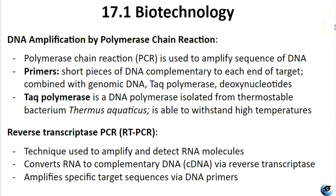We can also amplify fragments from an RNA template using reverse transcriptase PCR (RT-PCR). RT-PCR involves creating complementary DNA (cDNA) from an RNA template by incorporating DNA nucleotides through a process called reverse transcription, facilitated by an enzyme called reverse transcriptase. Once the cDNA is synthesized, regular PCR can be used to amplify the new strand. RT-PCR is really useful for studying gene expression, viral infections, and RNA-based diseases.